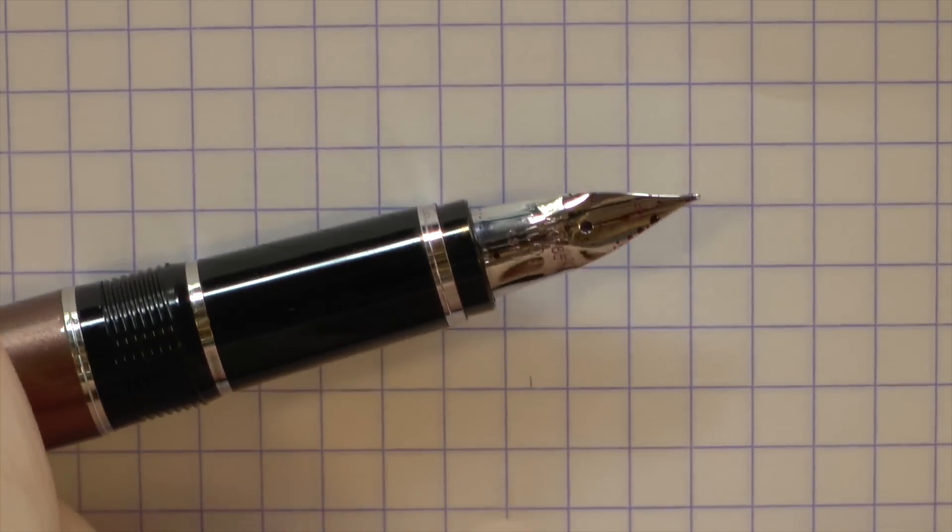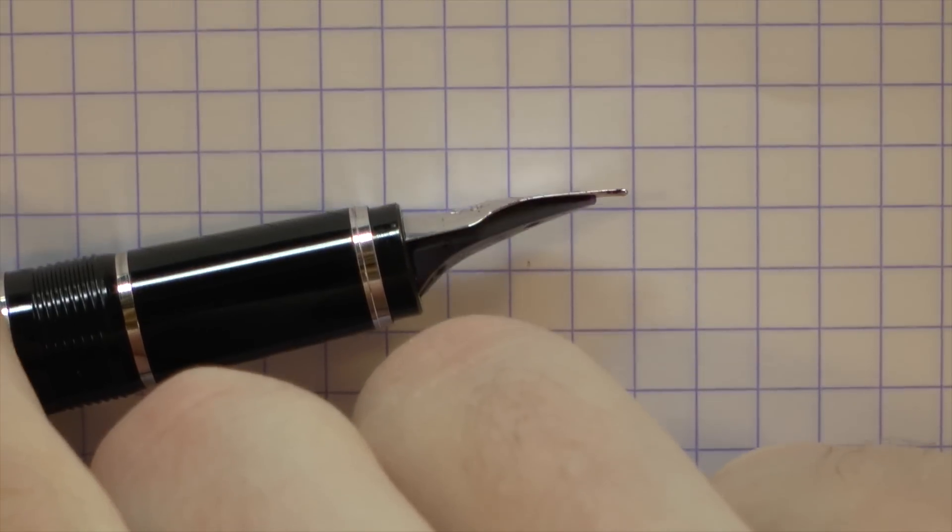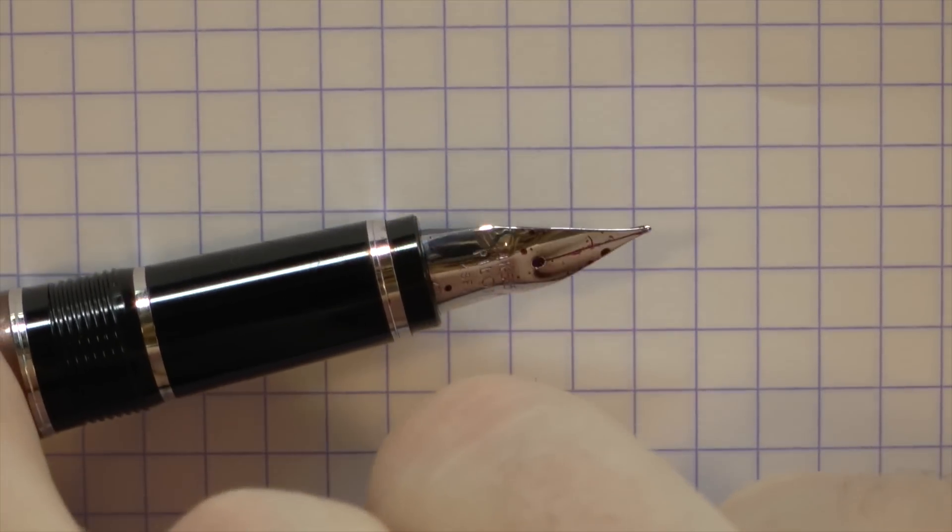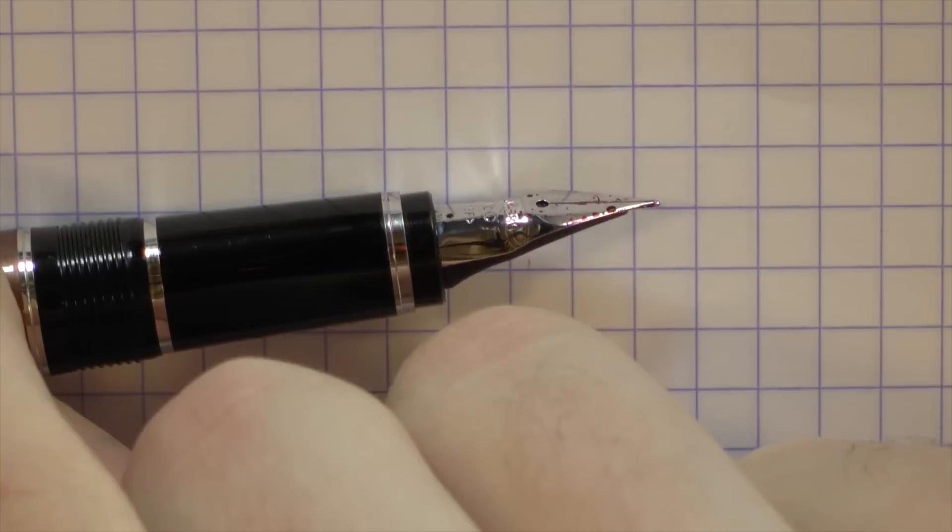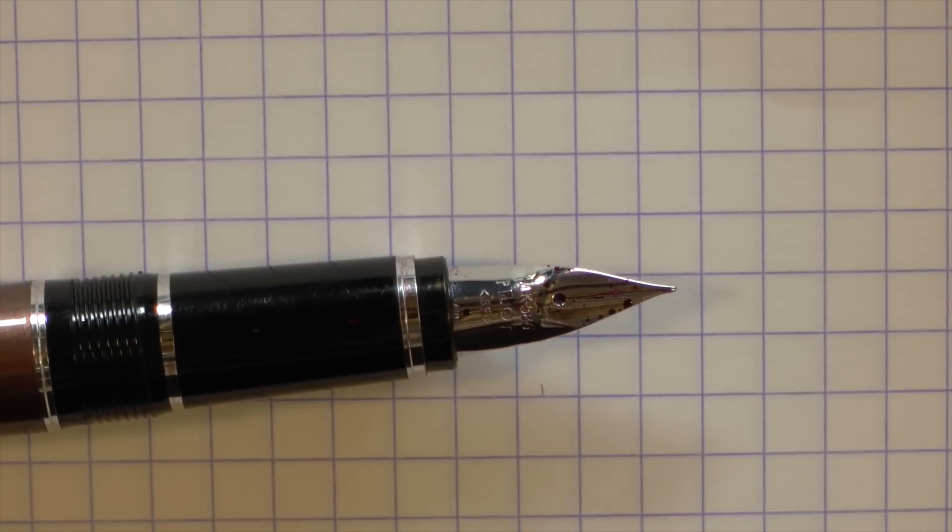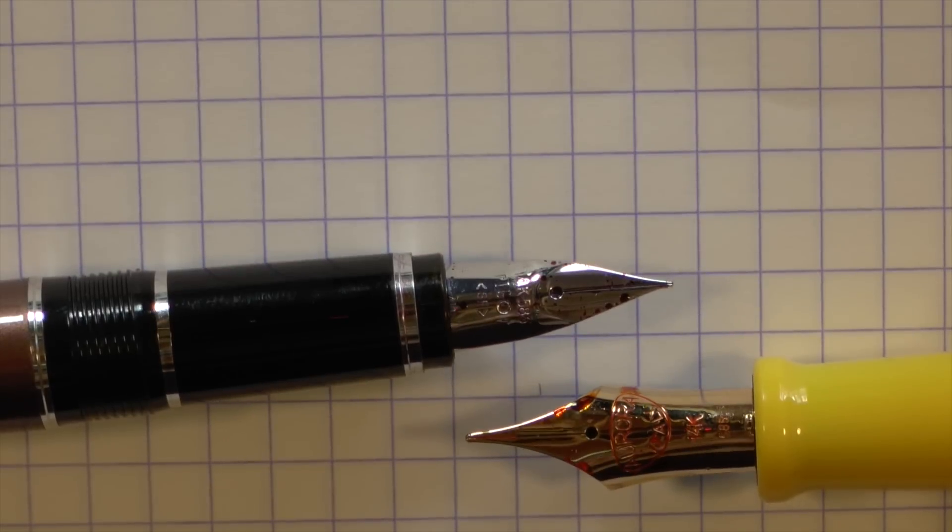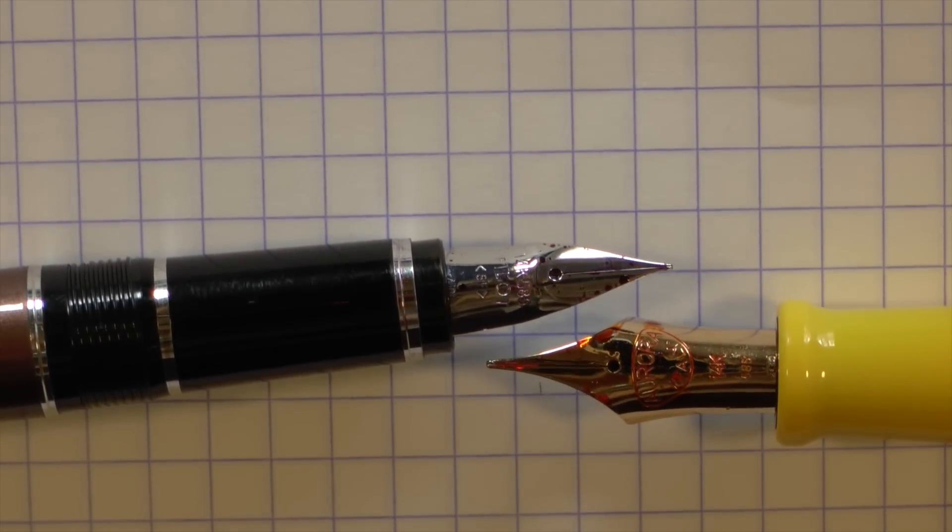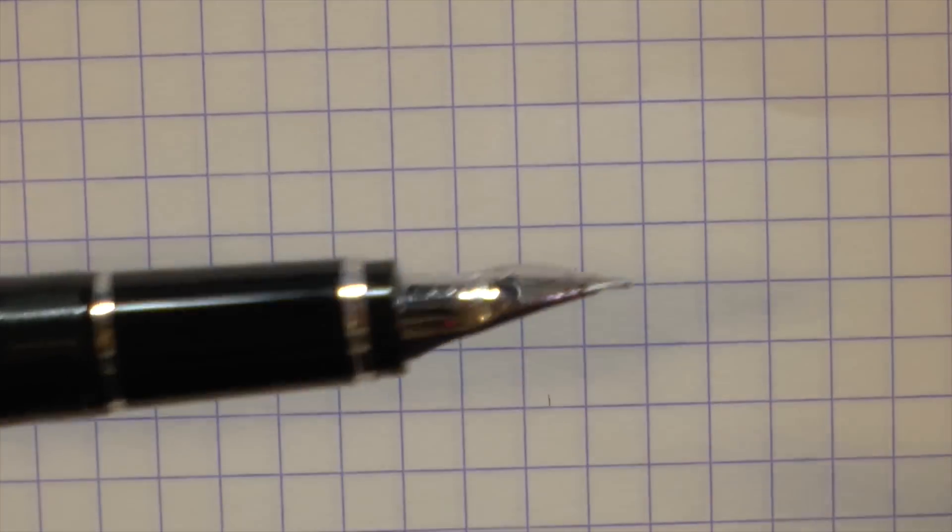Finally, Pilot slash Namiki. The Namiki is the fancy version of Pilot. They chose a very interesting nib design, which doesn't really look like a traditional nib at all, but I think it works in the same principle, namely thin tines. So it's kind of a similar thing as with that Aurora nib. It's a similar principle, just a longer, thinner tine. And the whole shape of the nib is interesting.